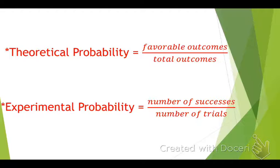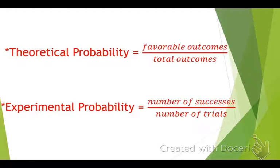There are a couple formulas I want you to know. The first one is theoretical probability — favorable outcomes over the total number of outcomes. Does anyone think they know what the word theoretical means? It's like something hypothetical, trying to figure out if it's right or not. We don't know if it's right or not, but it's what theoretically would make the most sense.